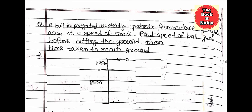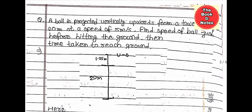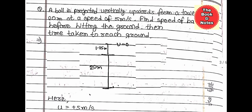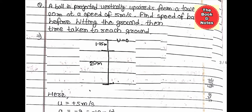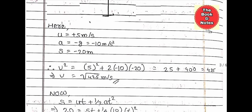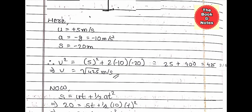Another question: a ball is projected vertically upwards from a tower of height 20 meters at a speed of 5 meters per second. Find (1) the speed of the ball just before hitting the ground and (2) the time taken to reach the ground. The diagram of the question is shown. You must try to solve it yourself, or you can take a screenshot of the solution.